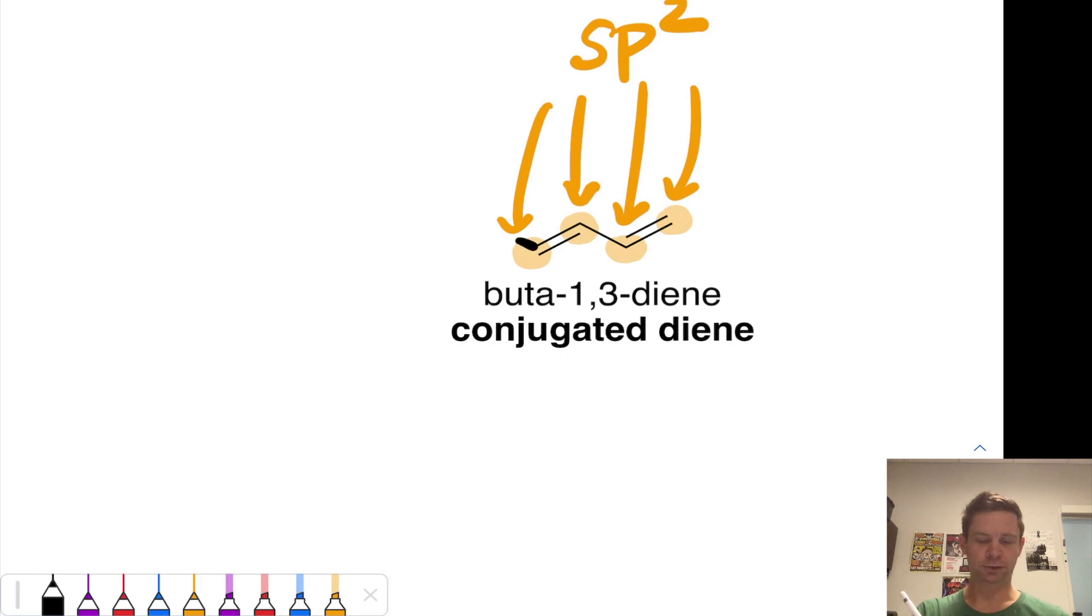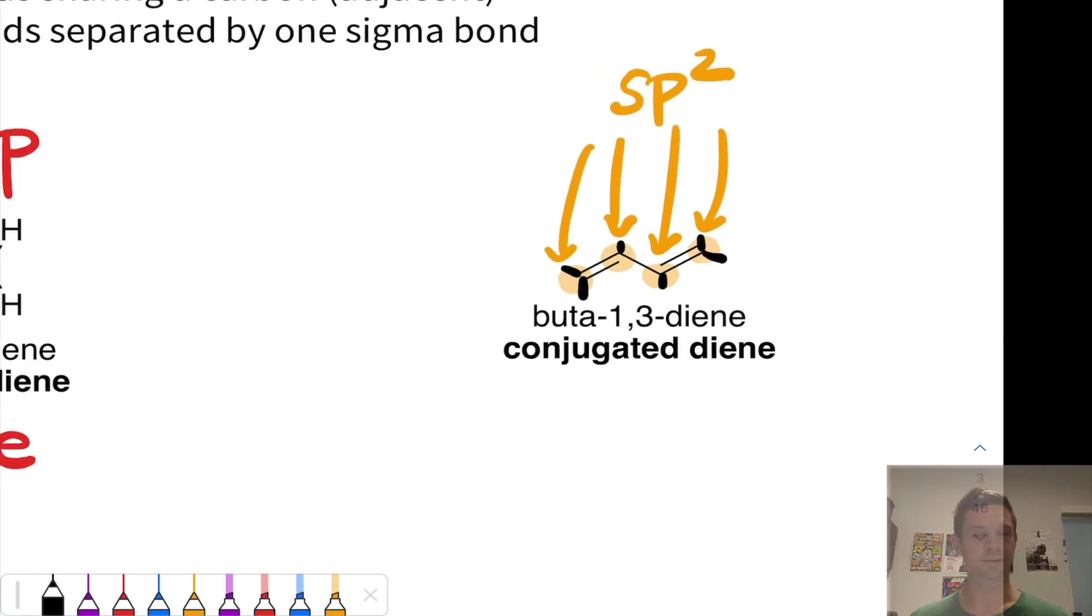And if you do that, you'll see that each carbon has three electron pair domains, three electron domains, and that corresponds to sp2 hybridization.